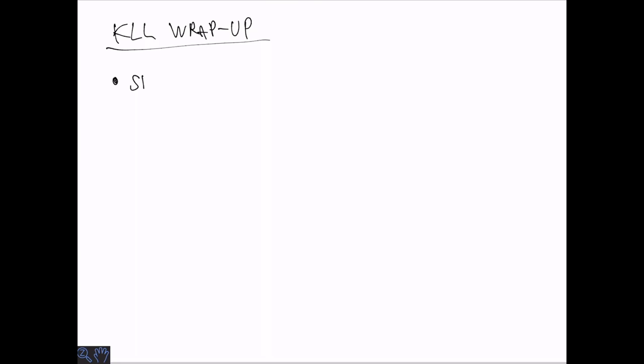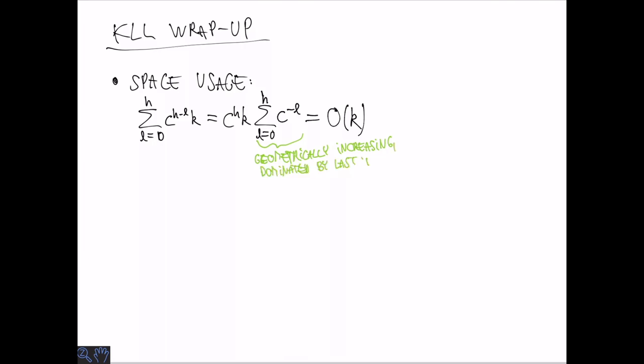To wrap up the analysis of KLL, we need to analyze the space usage. The space is the size of all the buffers combined and buffer L has size C to the L plus a constant, which we can ignore. And if we sum up all of these, because we have a geometrically increasing series, it's dominated by the last term. So the size of the large buffer, which is K. So all in all, we get something that's O of K where the constant depends on the choice of C.